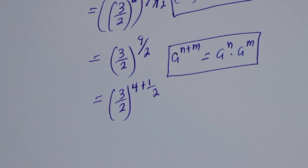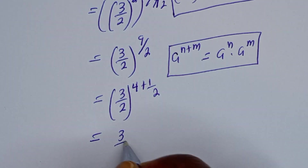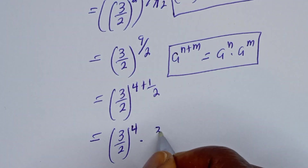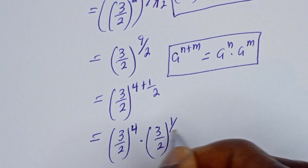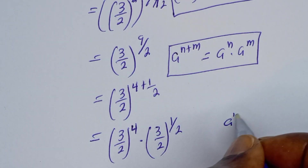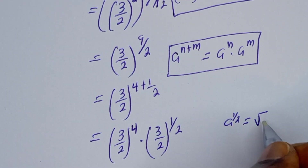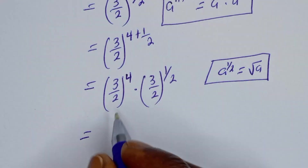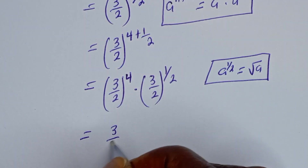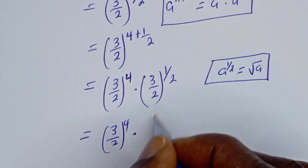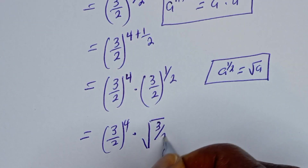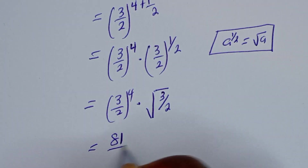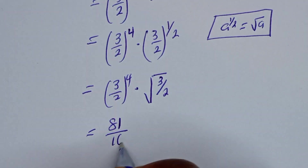This gives us 3 over 2 to the power of 4, multiplied by 3 over 2 to the power of 1 over 2. Now if you have a raised to power 1 over 2, this is equal to the square root of a. So this becomes 3 over 2 to the power of 4.